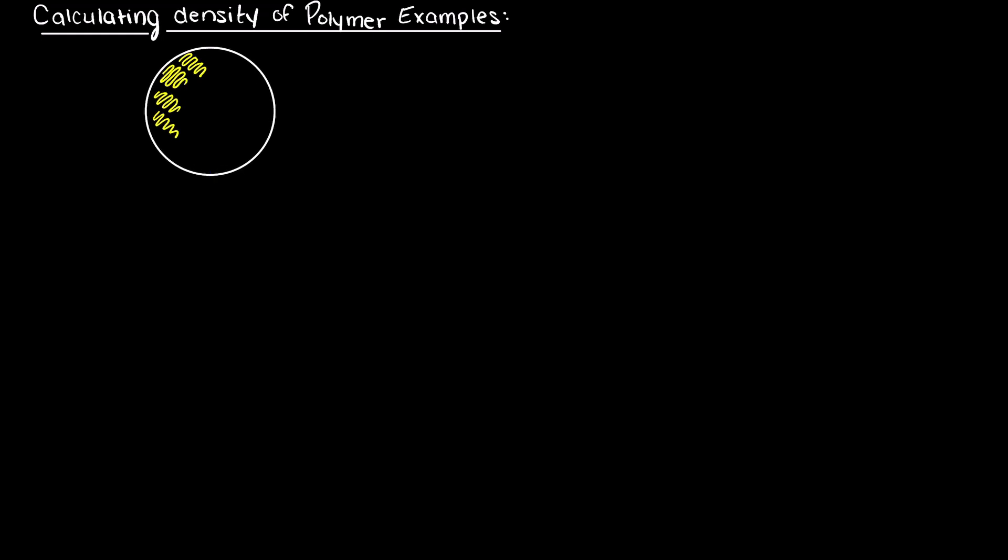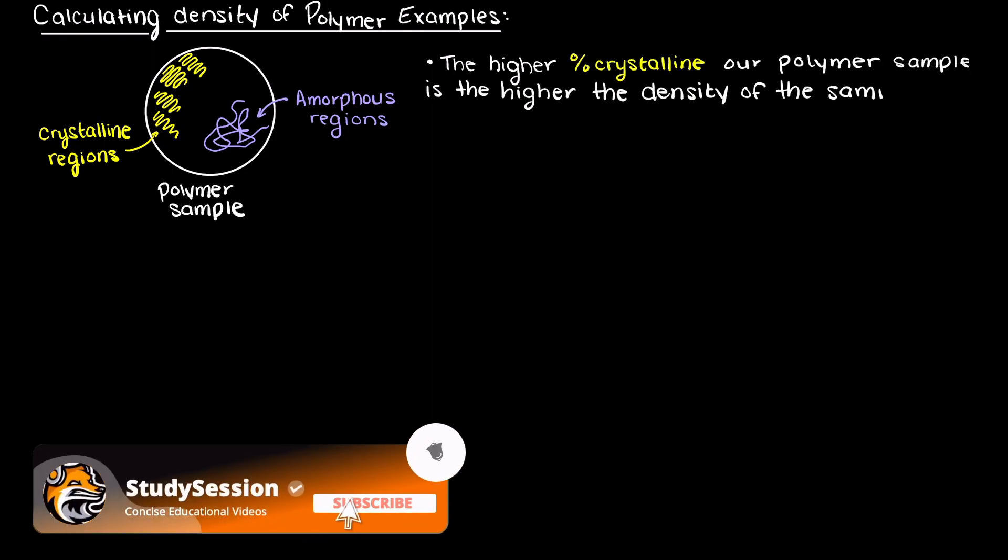Remember, that a crystalline region of a polymer are areas where there is a dense repeating packaging of the various polymer chains, whereas in the amorphous regions we just have random packaging and it is not densely packed. Therefore the more percent crystalline our polymer is, the higher density the material will be.